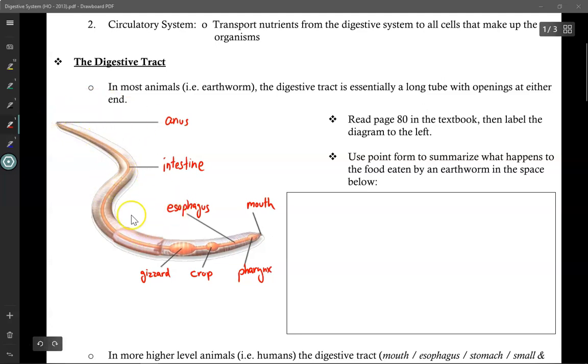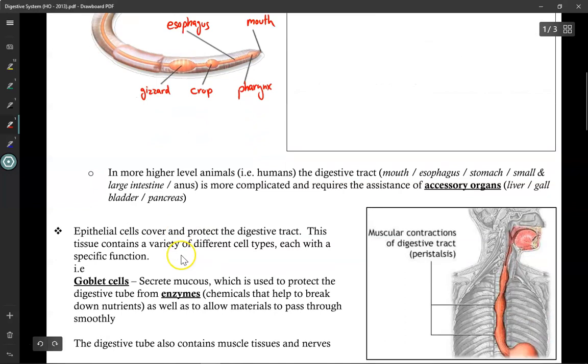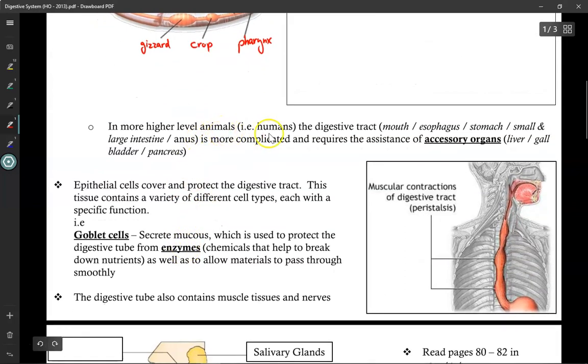Now, the earthworm is a very simplified version of our digestive tract. In more higher-level animals like us, the digestive tract is a little more complicated and requires the assistance of accessory organs in order for the food to be digested properly. Now, the mouth, esophagus, stomach, small and large intestine, and the anus are part of the digestive tract because they actually come in contact with the food.